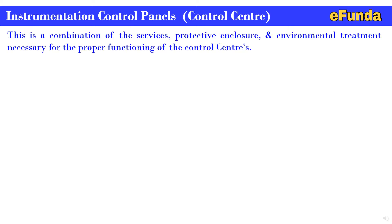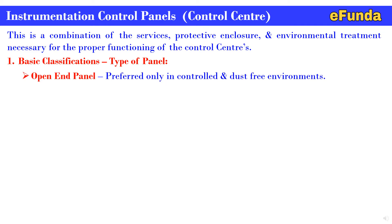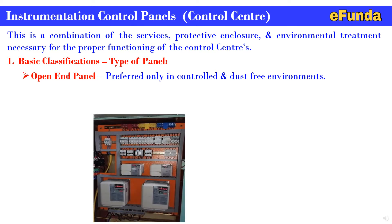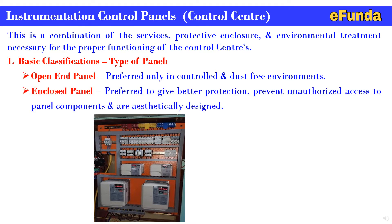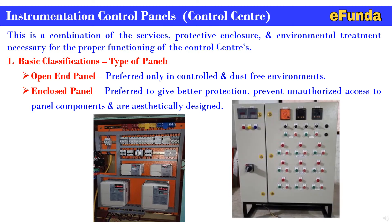Continuing with instrumentation control panels: this is a combination of services, protective enclosure, and environmental treatment necessary for the proper functioning of the control center. Now we will see the various types of control panels. First basic classification — type of panel: first, open end panel, preferred only in a controlled and dust-free environment. Second, enclosed panel, preferred to give better protection, prevent unauthorized access to panel components, and aesthetically designed. All components are assembled inside the panel and enclosed by a door, with all monitoring controls and push buttons indicated on the front.